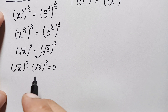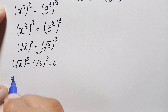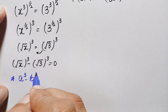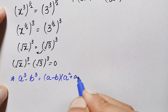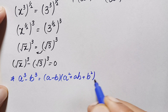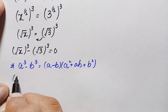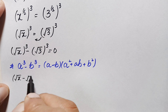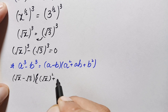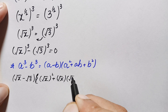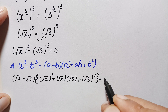Both terms are cubed, so we apply the cubic algebraic identity: a cubed minus b cubed equals (a − b)(a² + ab + b²). Here a is √x and b is √3. Applying this identity gives us: (√x − √3)(√x² + √x · √3 + √3²) is equal to 0.